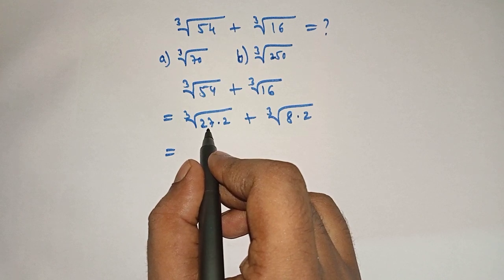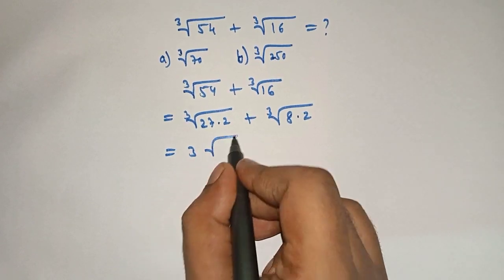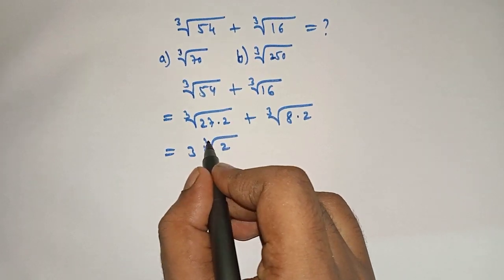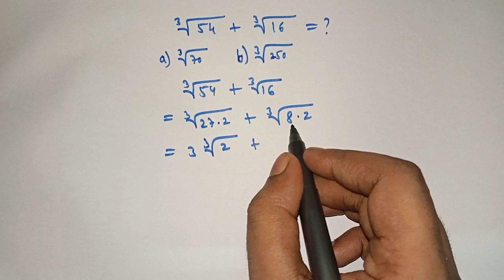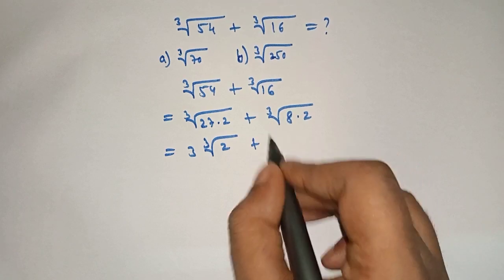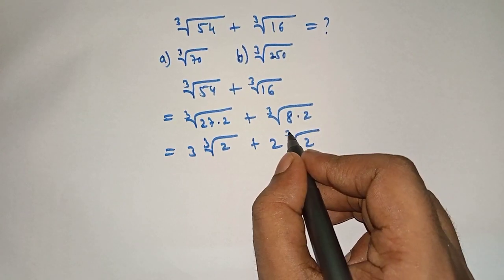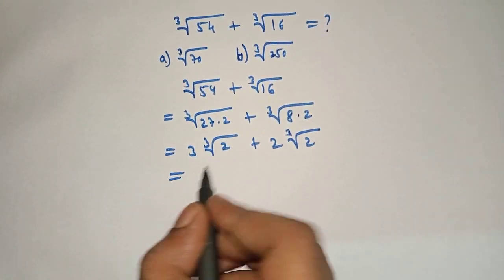3. So we will take 3 out. Now what will remain under the cube root? 2. Plus what is cube root of 8? 2. So we will take it out: 2 cube root of 2.